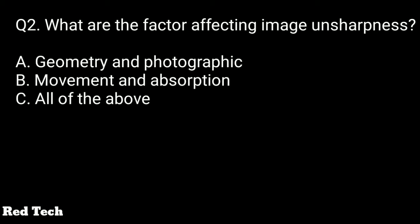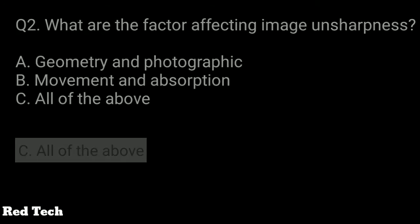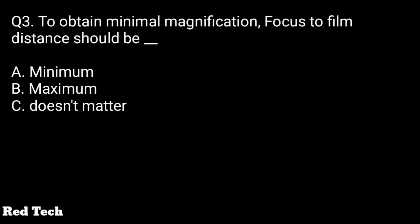Question number two: what are the factors affecting image unsharpness? Option A is geometry and photographic, option B is movement and absorption, option C is all of the above. The right answer is all of the above — all are factors affecting unsharpness in the radiographic image.